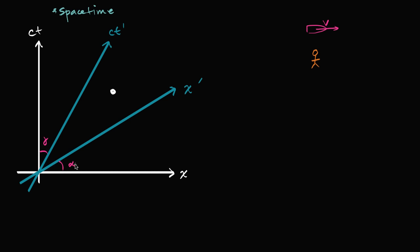If her velocity is v, or the magnitude of her velocity is v in my frame of reference, this angle is going to be the inverse tangent — the arctangent — of the ratio between her relative velocity and the speed of light: the inverse tangent of v over c. So the faster she goes, these two axes start squeezing together, and if she would approach the speed of light, they would both approach a 45-degree angle and actually start to coincide.